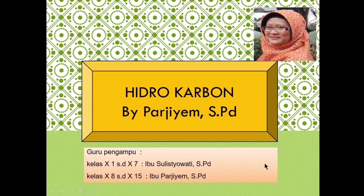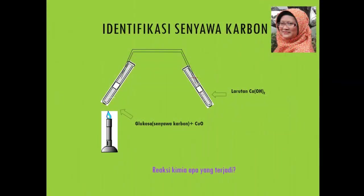Pada kesempatan kali ini kita akan membahas mengenai hidrokarbon. Sebelumnya, ada identifikasi senyawa karbon — bagaimana suatu senyawa bisa teridentifikasi mengandung senyawa karbon maupun hidrogen. Perhatikan gambarnya: ini adalah lilin. Senyawa yang akan kita uji kita bakar, kemudian dari tabung dihubungkan dengan tabung berikutnya yang berisi larutan Ca(OH)₂ atau air kapur.